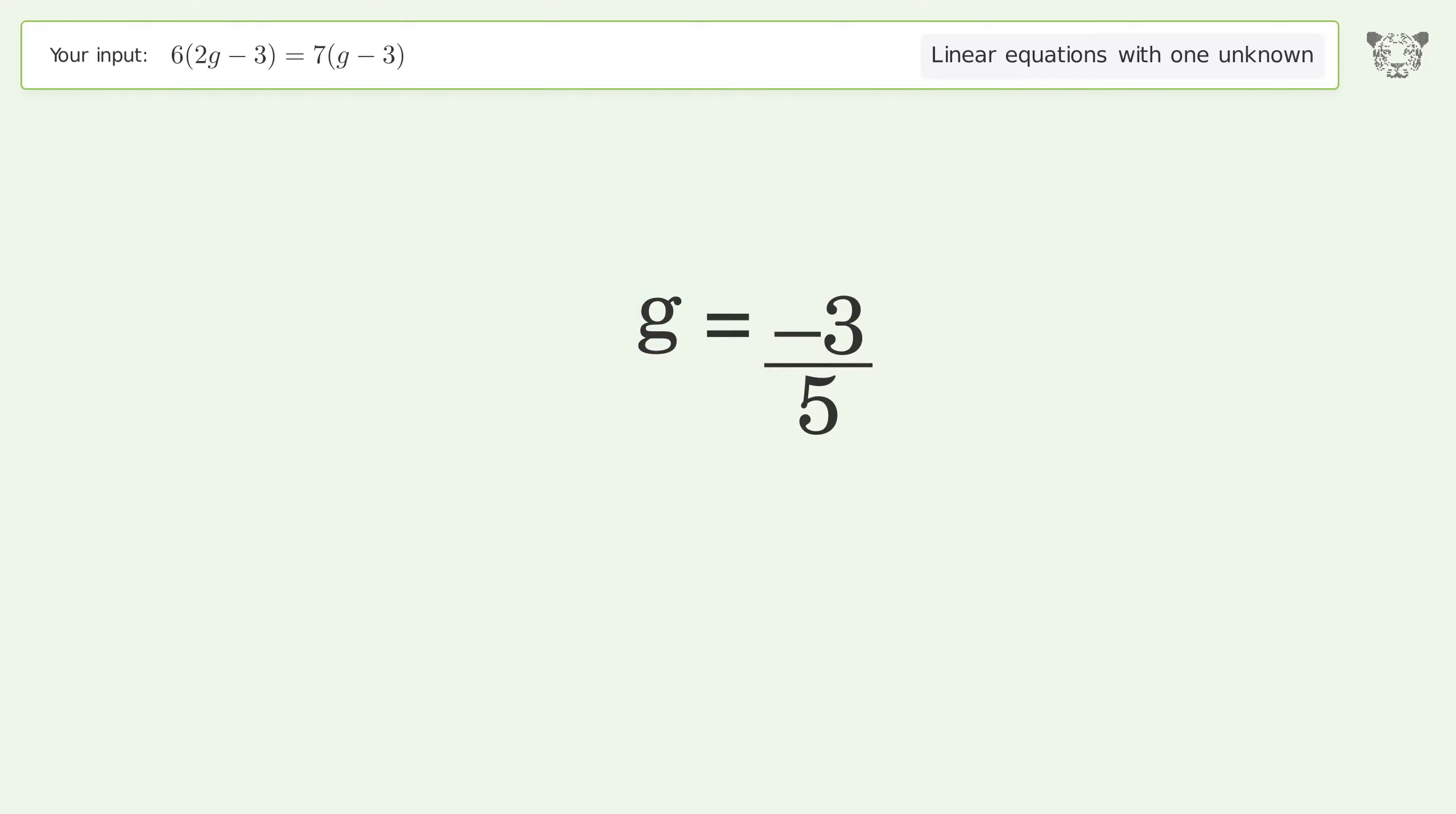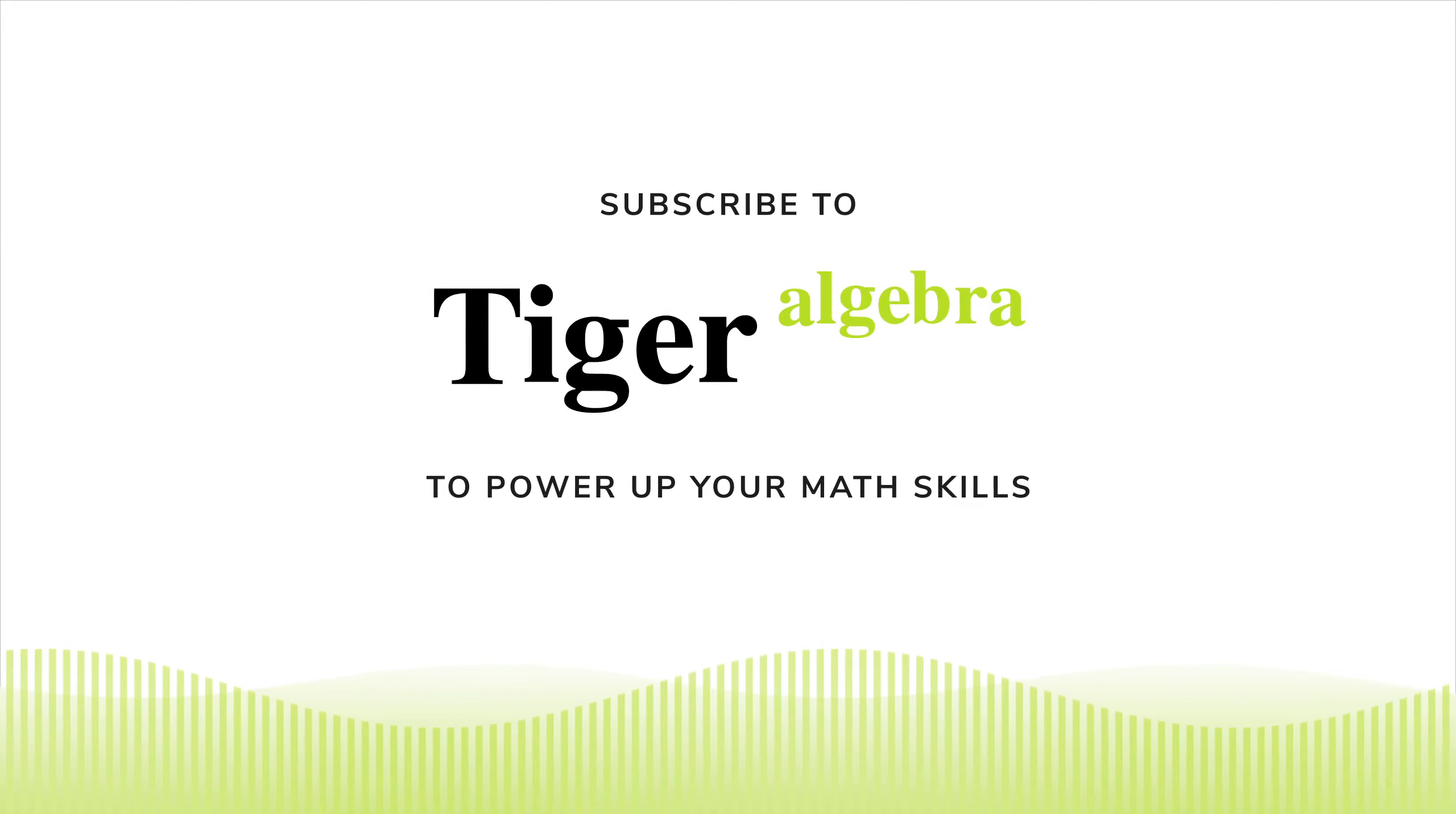And so the final result is g equals negative 3 over 5.